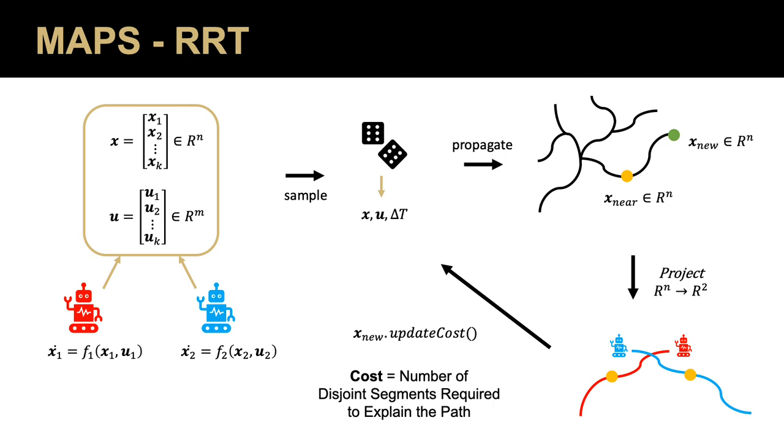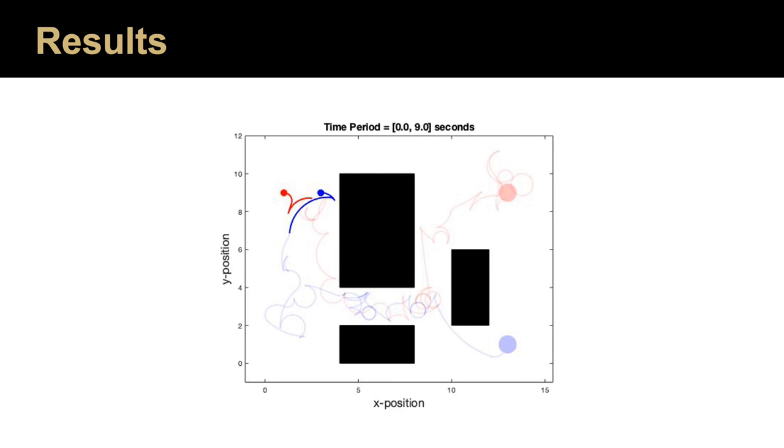But if we provide Maps RRT with a maximum cost of 4, this could be the result. Notice how it is clear the agents do not collide.